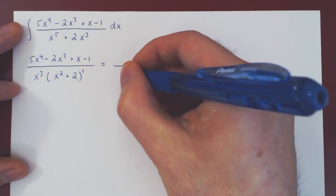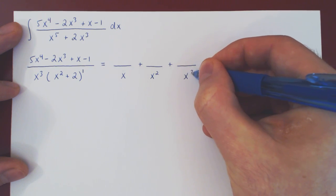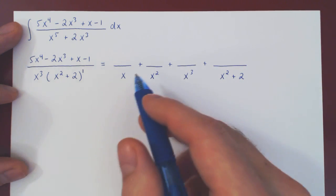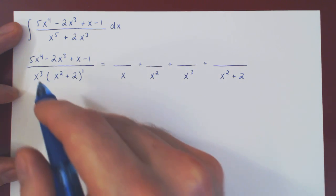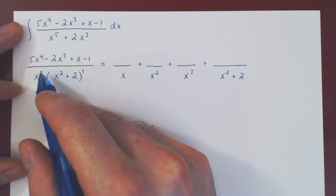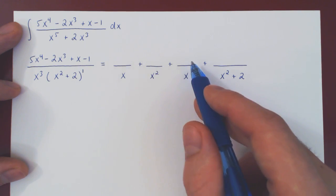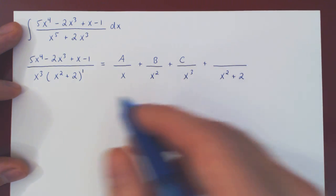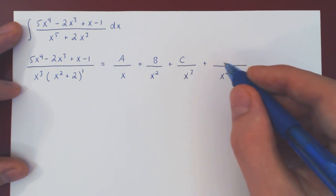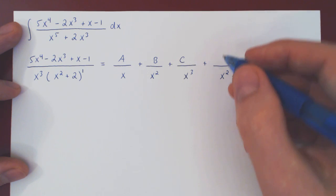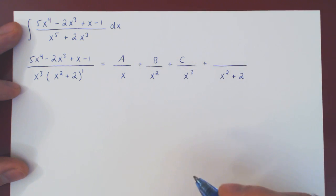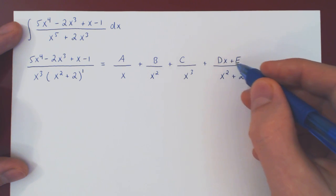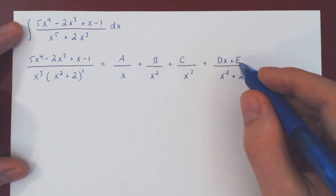For x cubed we'll get denominators x, x squared, and x cubed; and for x squared plus 2, simply x squared plus 2. For the numerators of the first three fractions — originating from the linear factor x — each numerator has to be a constant. But the final partial fraction originates from an irreducible quadratic factor, therefore its numerator is not a constant but a linear polynomial. It could end up being a constant, but we do not know this ahead of time, so we'll go with dx plus e.